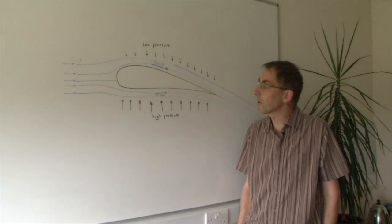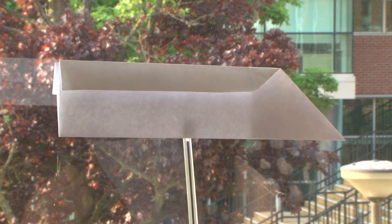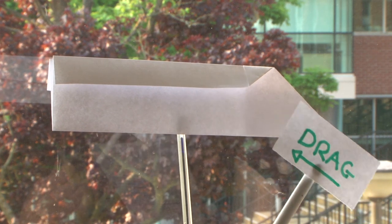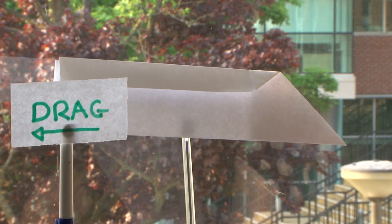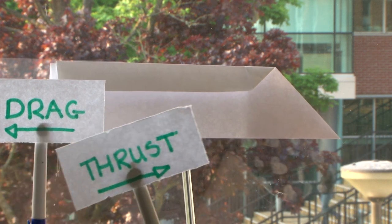As aeroplanes move through the air, the air pushes against the aircraft, causing a force known as drag. To make the plane travel, the turbine engines create a forward-moving force, known as thrust, to counteract the drag.